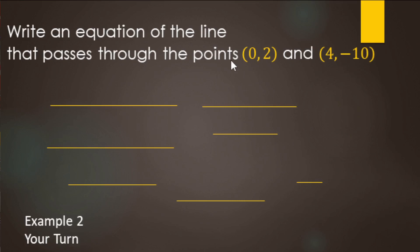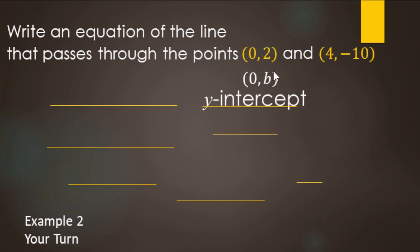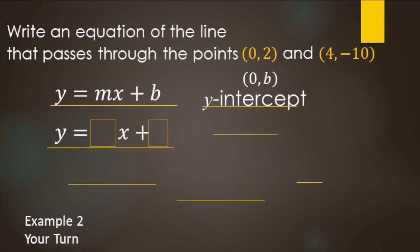We're going to write an equation for a line through the two points (0, 2) and (4, −10). We do notice that we have a y-intercept here — the y value when x is zero puts you on the y-axis. So two is the y-intercept. Between two points we can find slope, so we're going to use slope-intercept form. We replace b with the y-intercept, so b equals two.